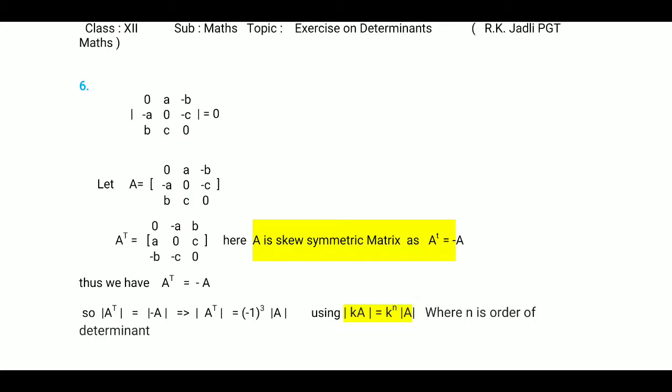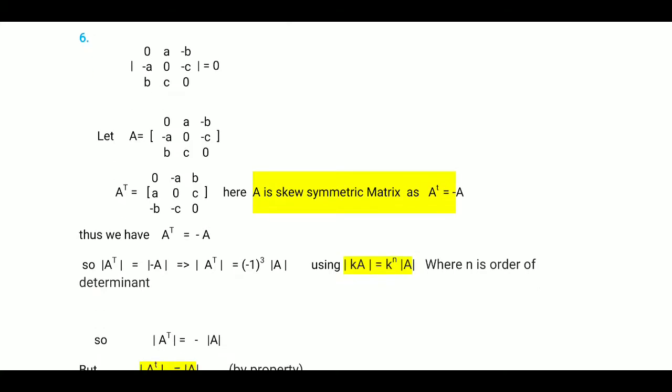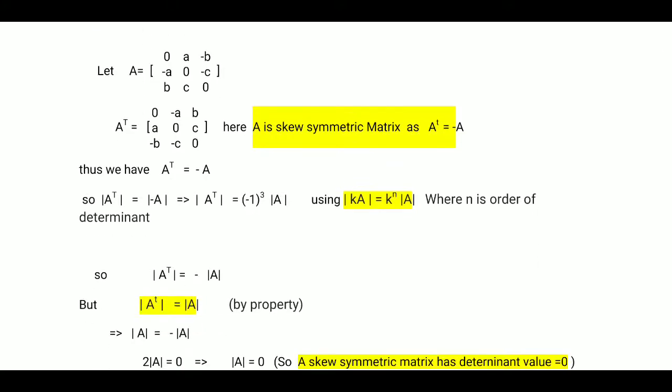Here all diagonal elements are 0. If we take this as a matrix A and transpose it, we get that after transposition it is equal to minus A. So this is a skew symmetric matrix, because A transpose equals minus A in this case, and we know that if a skew symmetric matrix exists, its diagonal elements are 0.